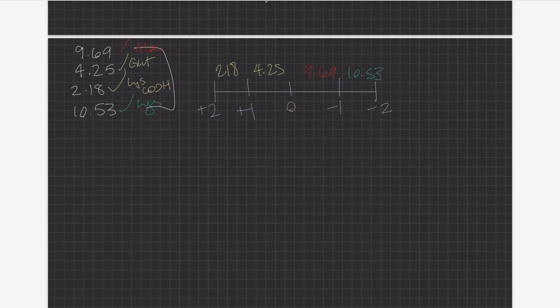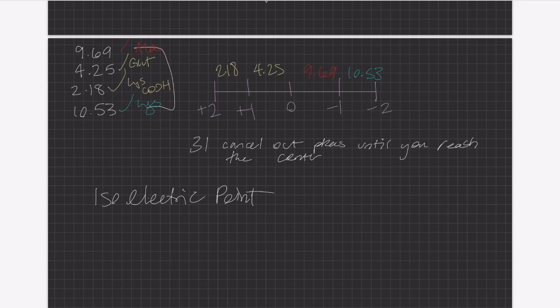Now, we're set up to get our final answer. In order to find the isoelectric point, you cancel out the two outermost values. And if you're confused as to why, you need to understand what isoelectric point even means.